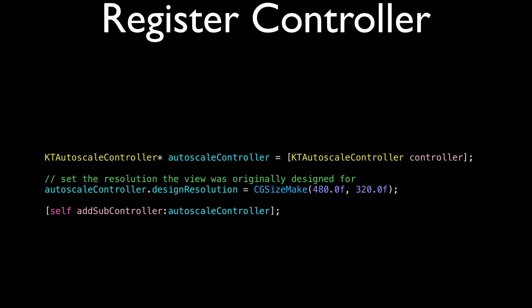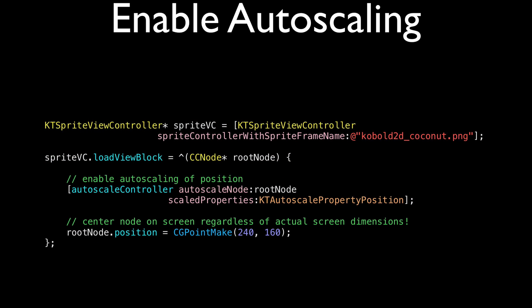Basically you treat all the larger screen sizes as the same size as the iPhone 480x320. To enable autoscaling, you create a sprite view controller in Cobalt Touch and add just one line — calling the autoscale node method with the root node on the autoscale controller — and you set the scale properties, which in this case is just the position. To center your node on the screen you set it to 240 by 160, which is half the iPhone screen size. If you run this on an iPad, a widescreen iPhone, or on the Mac in any window size, this node will always be centered in the window.